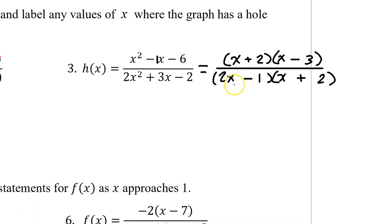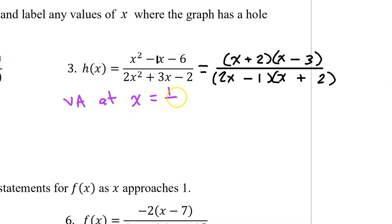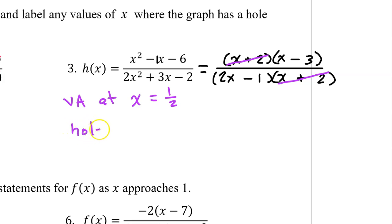The 2x minus 1 in the denominator does not cancel out with anything, so we have a vertical asymptote at x equals 1 half — that's what we get if we set this equal to 0 and solve. The x plus 2 in the denominator cancels out the x plus 2 in the numerator, meaning we have a hole at x equals negative 2.